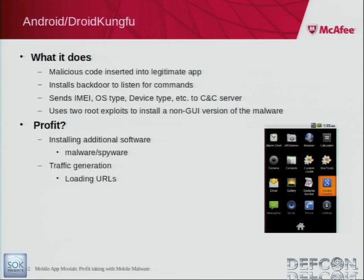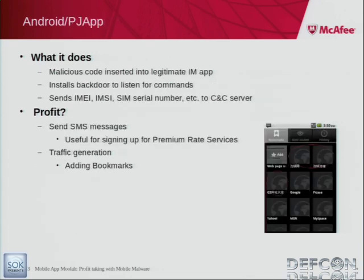Droid Kung Fu makes money by loading URLs in the browser, generating traffic towards websites - and that's also used for loading ad clicks. An ad click is a URL you load, posted as an individual ad click for millions of users. Another variant, PJ App, is another variation in this family that invades and installs into legitimate applications to make money. This one signs up for premium rate services and also adds bookmarks.